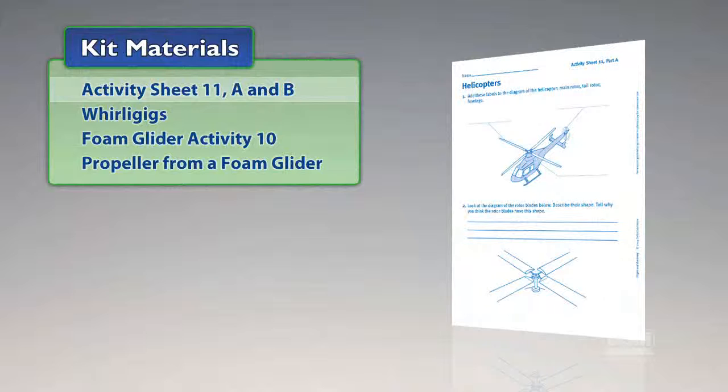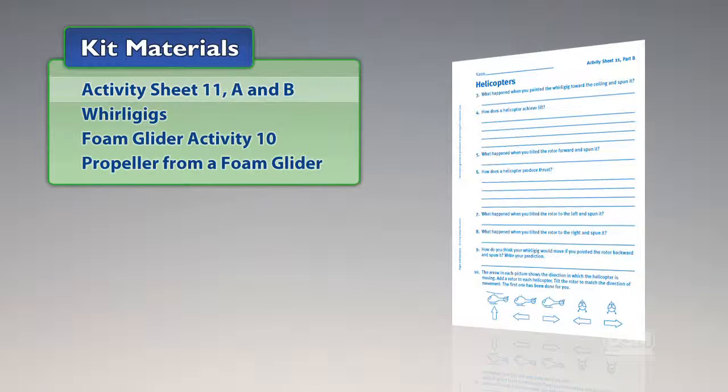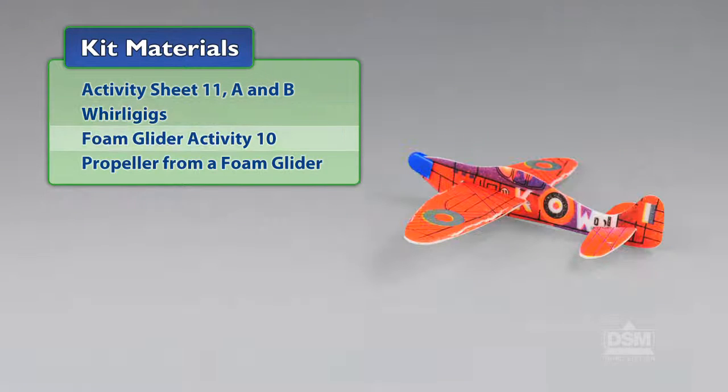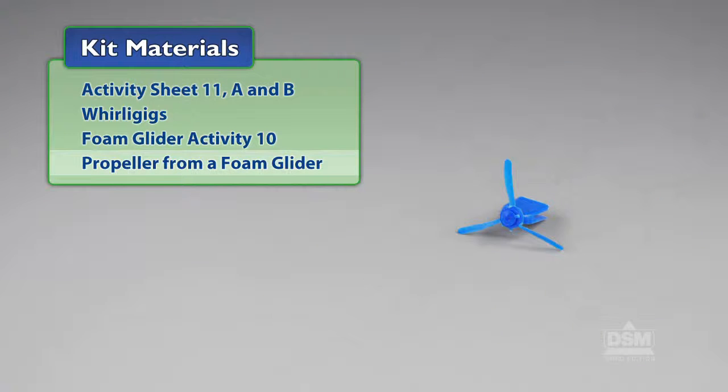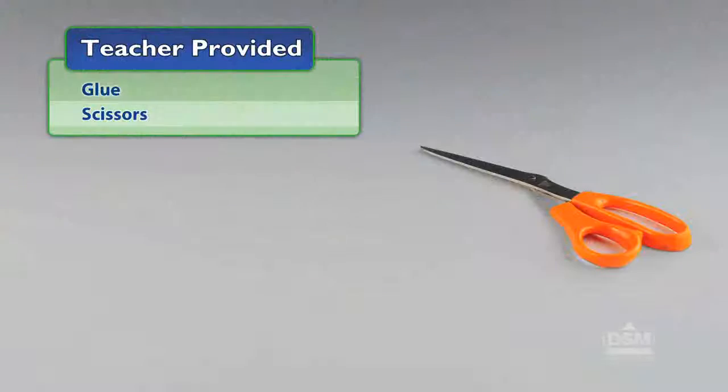You will need the following material from the kit: Activity sheet 11, parts A and B, whirligigs, foam glider from Activity 10 and a propeller from a foam glider. You will also need to provide glue and scissors.